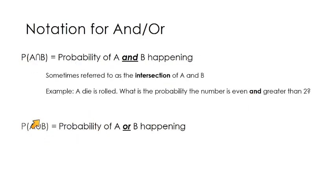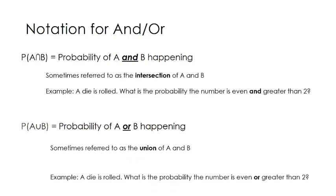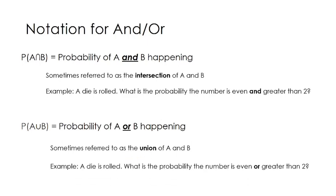We can also do an OR probability. The symbol is like the intersection symbol flipped upside down, and that's called the union. So that's the union of A and B. An example would be: you roll a die, and what's the probability that the number is even or greater than 2? These are two different problems with two different answers.